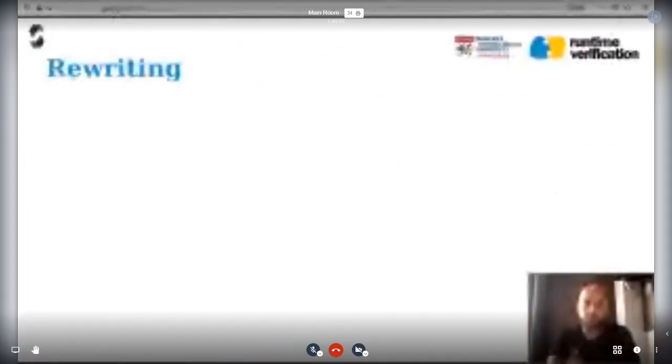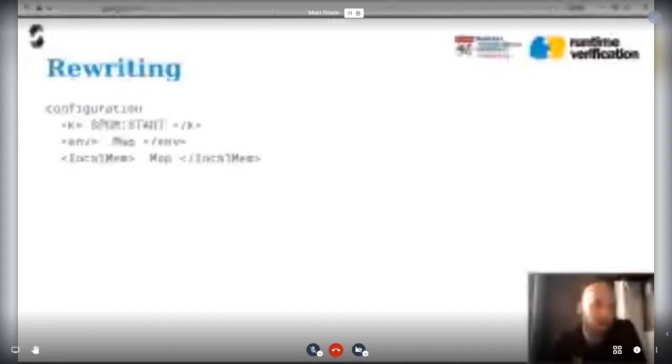I want to show you the formalism that K is based on - it's a rewriting formalism. The first thing you need to define is the state that the rewrites should act on, which we call the configuration. It's built up of what we call cells. Here we have a configuration which contains the program to run in a cell that we name K, an environment for current variables, and a local memory storage.